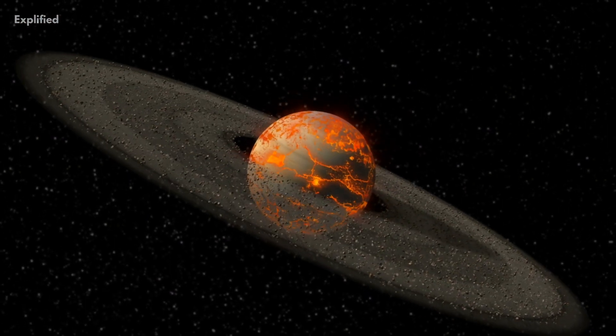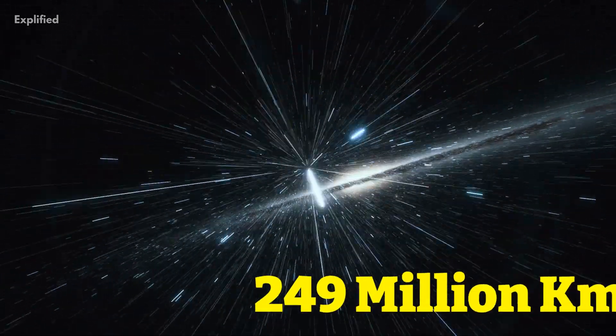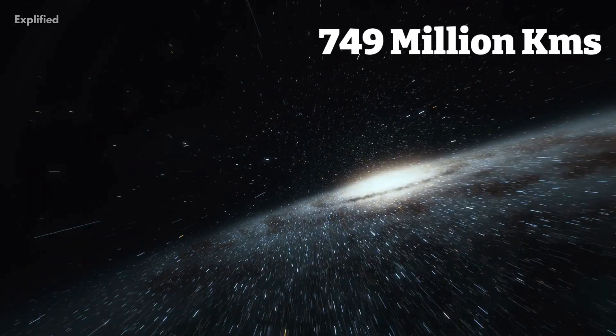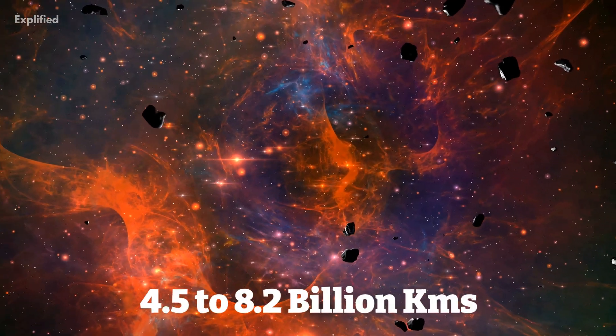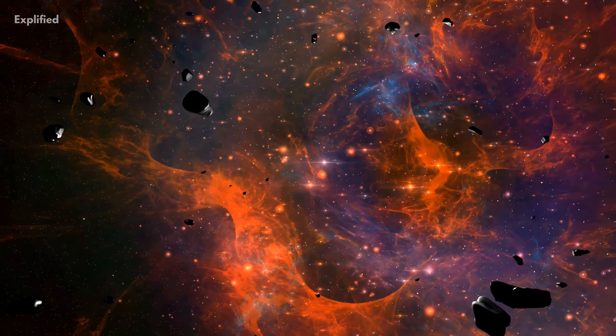The asteroid belt is believed to be between 249 million kilometers and 749 million kilometers from the sun, whereas the Kuiper belt is supposed to be between 4.5 to 8.2 billion kilometers away from the sun.